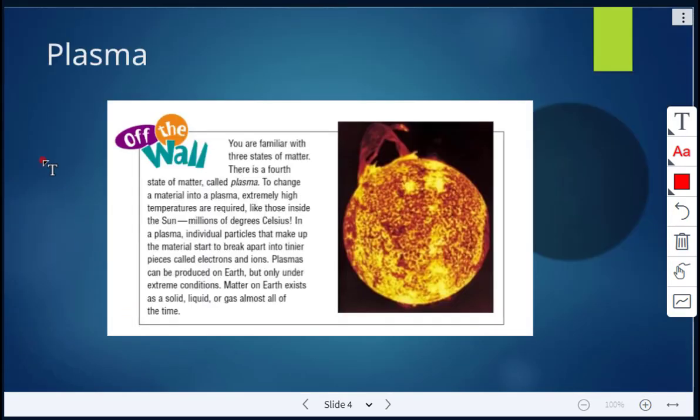Another form is plasma. You're already familiar with the three states of matter: solid, liquid, and gas. The fourth state of matter is called plasma. To change a material into plasma, extremely high temperatures are required, like inside the sun, which is millions of degrees Celsius. In plasma, individual particles that make up the material start to break apart into electrons and ions. Plasmas can be produced on Earth, but only under extreme conditions. Matter on Earth exists as a solid, liquid, or gas almost all of the time.